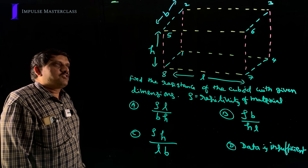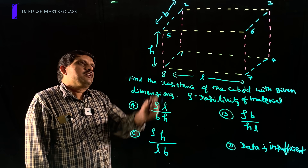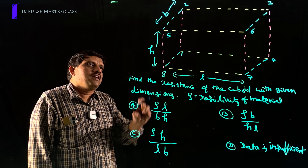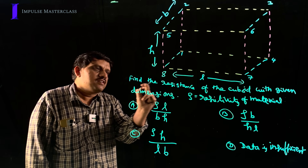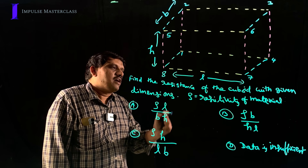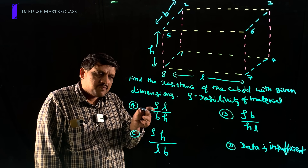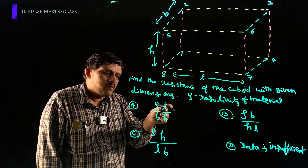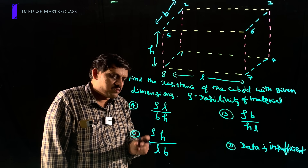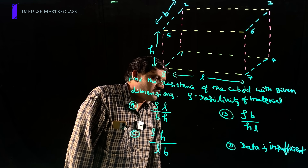Let us look at this question to find the resistance of a cuboid. The cuboid has length L, width B, and height H. Find the resistance of the cuboid with the given dimensions, where rho is the resistivity. Options: A) ρL/BH, B) ρB/HL, C) ρH/LB, D) data is insufficient.